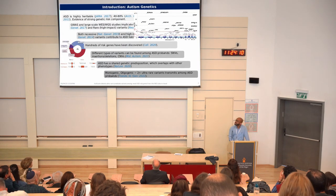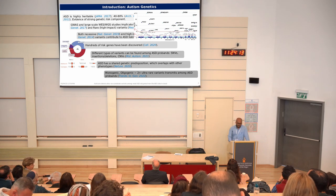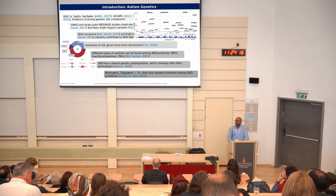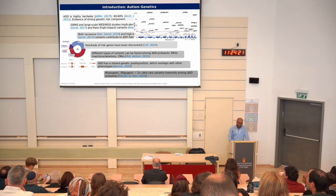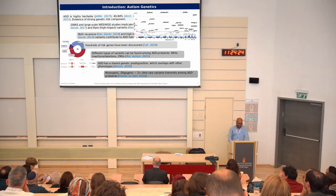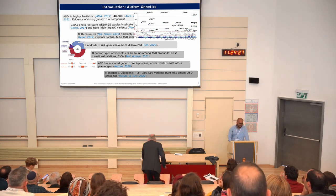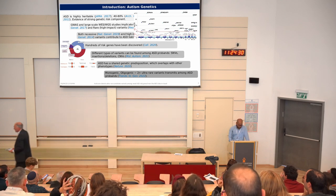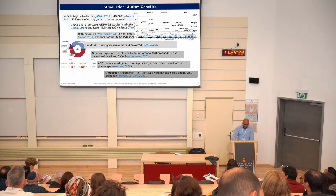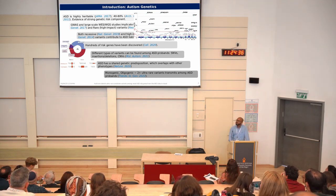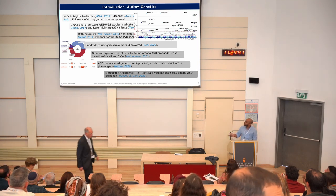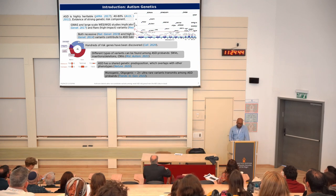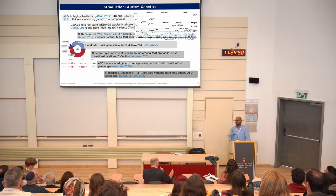Talking about autism genetics, it's a highly heritable neurodevelopmental disorder with high heritability estimates, meaning most of the reasons behind ASD are genetic. Different whole-exome sequencing and whole-genome sequencing studies have detected common and rare high-impact variants. Until now, hundreds of genes have been discovered from different whole-exome and whole-genome sequencing studies.